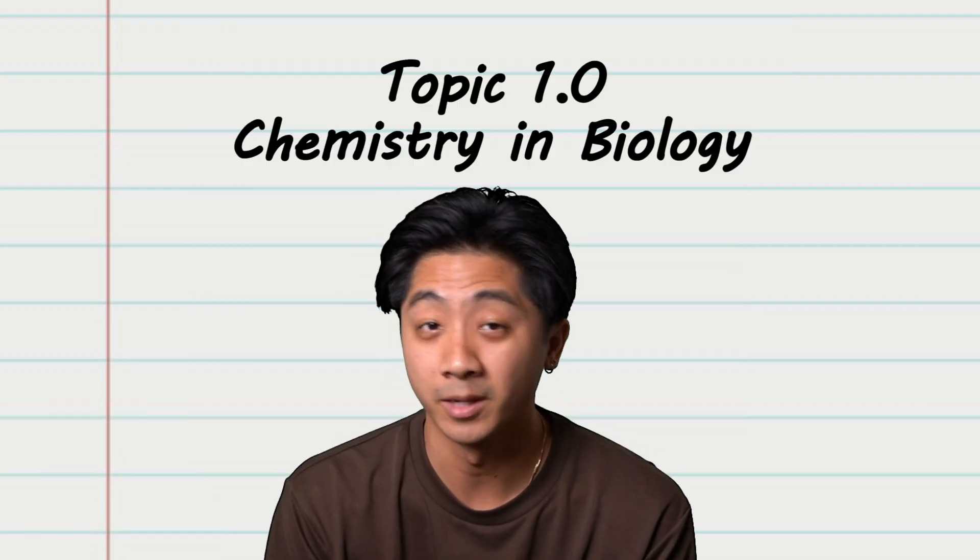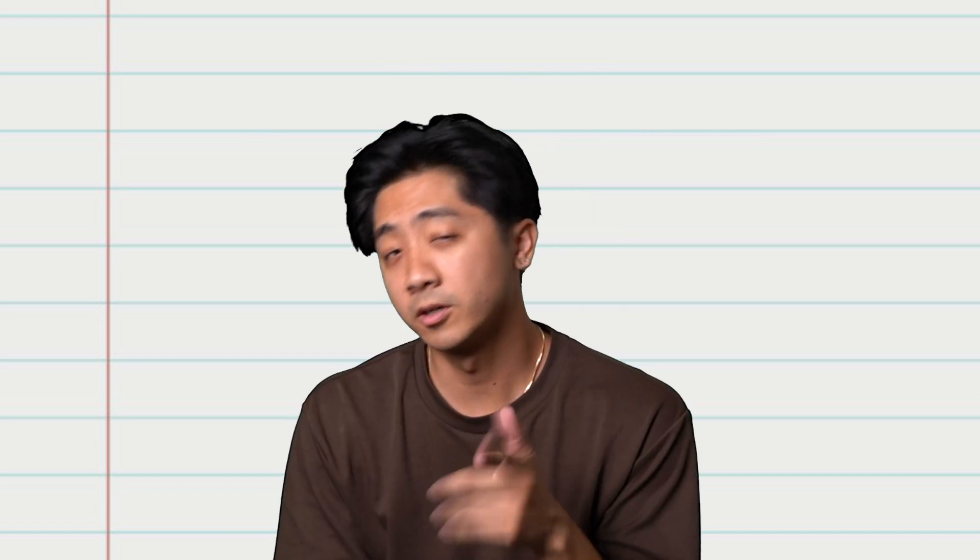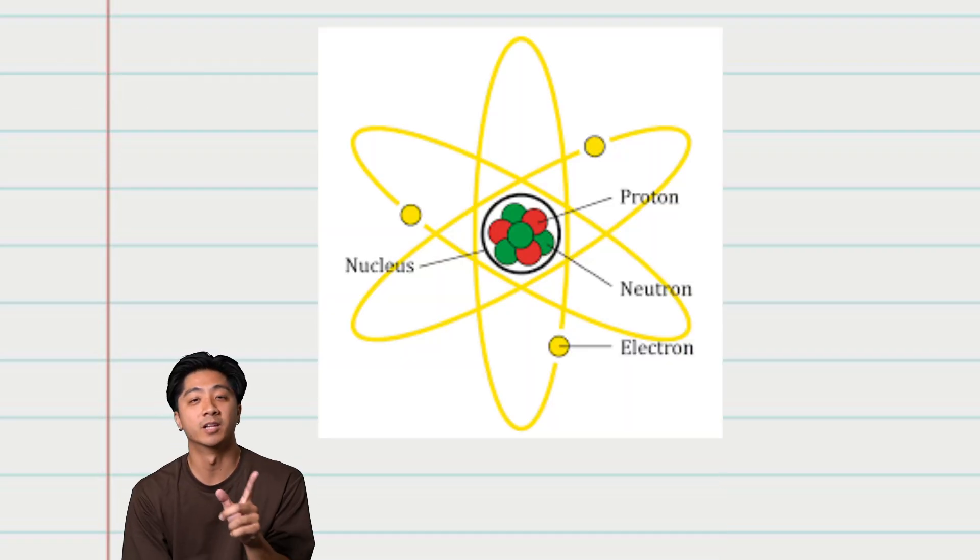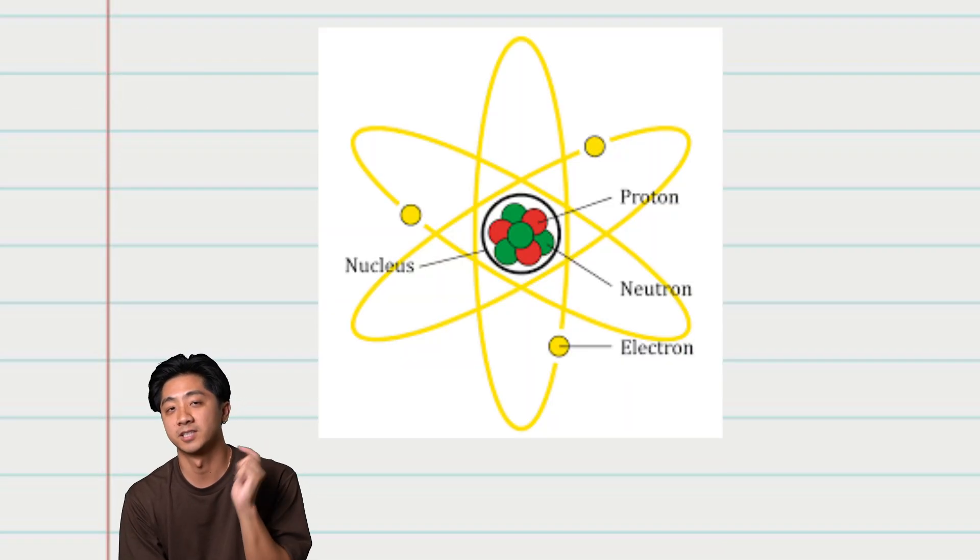Topic 1.0, chemistry and biology. Starting off, we need to take a step back and review our chemistry. Obviously we all remember our chemistry, right? Of course not. So let's take it all the way back. Simply put, elements are made of protons, neutrons, and electrons.